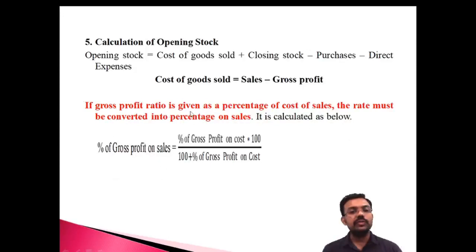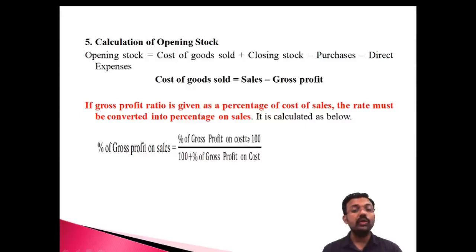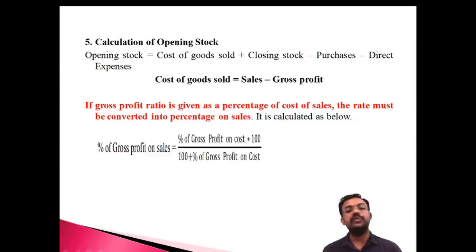If the gross profit ratio is given as a percentage of cost of sales, then we can convert it into a sales percentage. We divide by 100 plus the gross profit on cost. This is what we normally do to convert from cost-of-sales percentage to sales percentage.